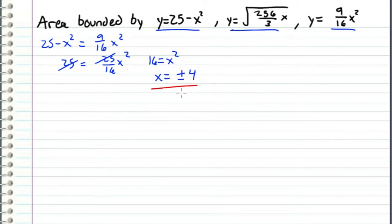So let's keep this in mind, but we'll come back to this later. Now let's consider the intersection of this upward parabola and this square root function. So this would be when the square root of 256 over 3x equals 9 sixteenths x squared. For an intersection, these two functions are equal, therefore their squares are equal. So if we square each side,